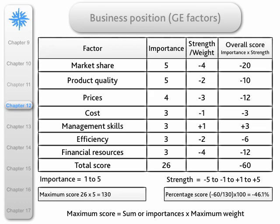Here is a hypothetical business position where we have market share, product quality, etc. Each factor is given an importance, with five being the most important and one being the least important. Each factor is also given a strength or weight, where minus five is the worst and plus five is the best. We multiply those two factors together — so we get minus 20 on the first line — and they sum to minus 60. Working that out as a percentage, where the maximum possible score is 130 and our actual score is minus 60, gives us an overall score of minus 46.1%.